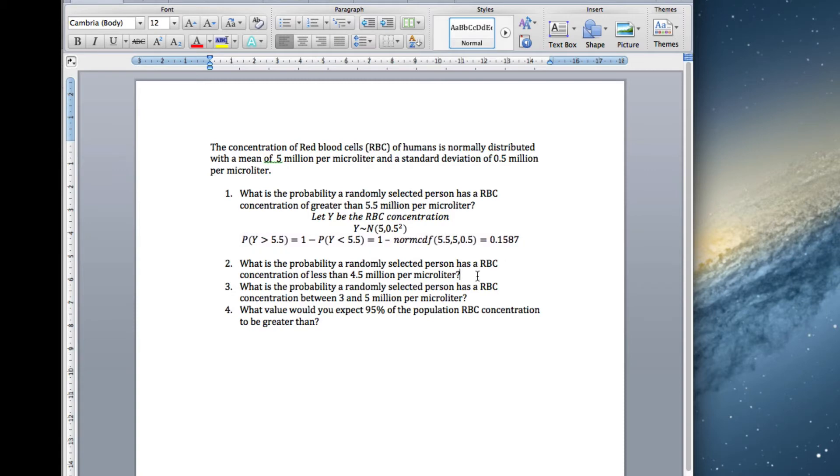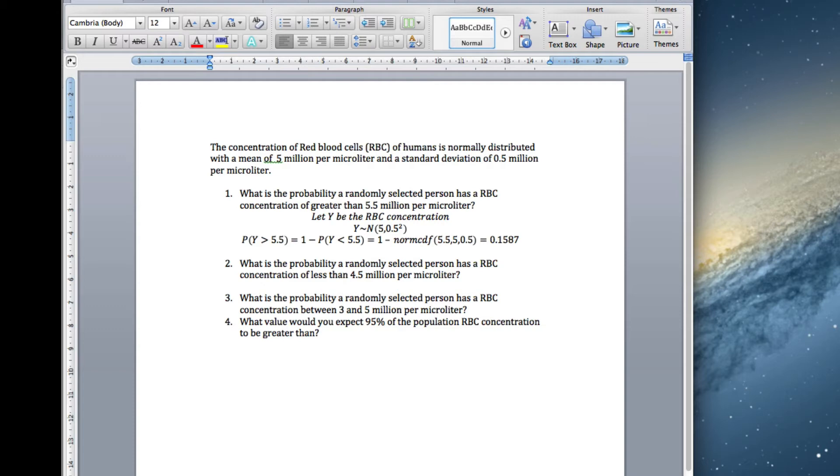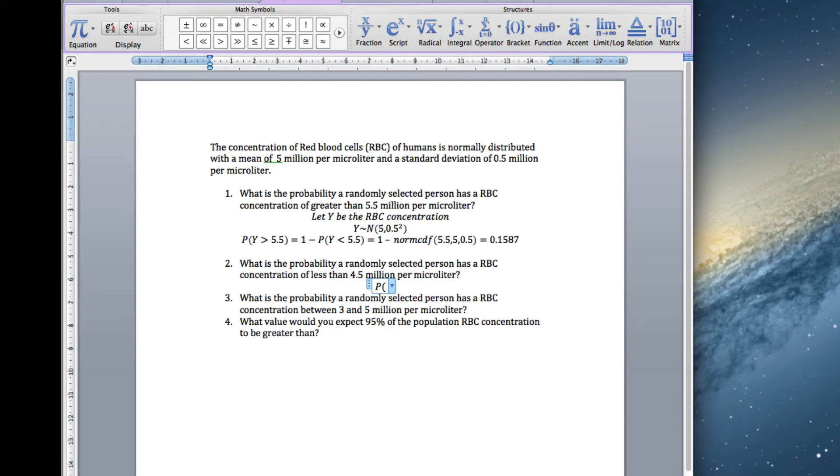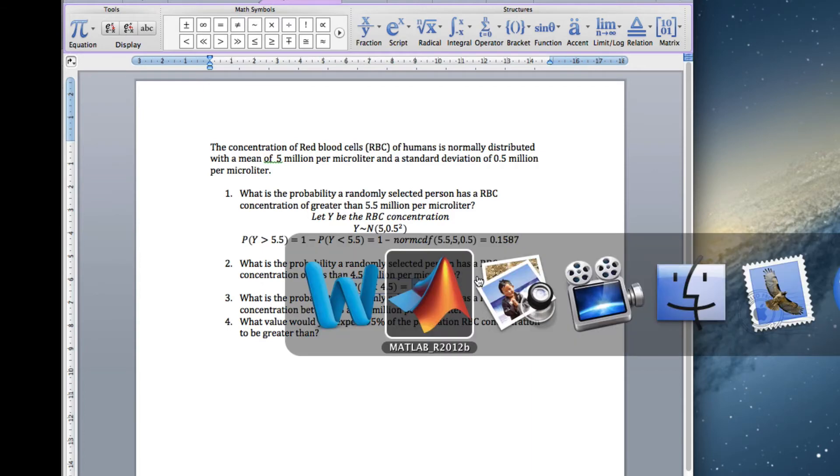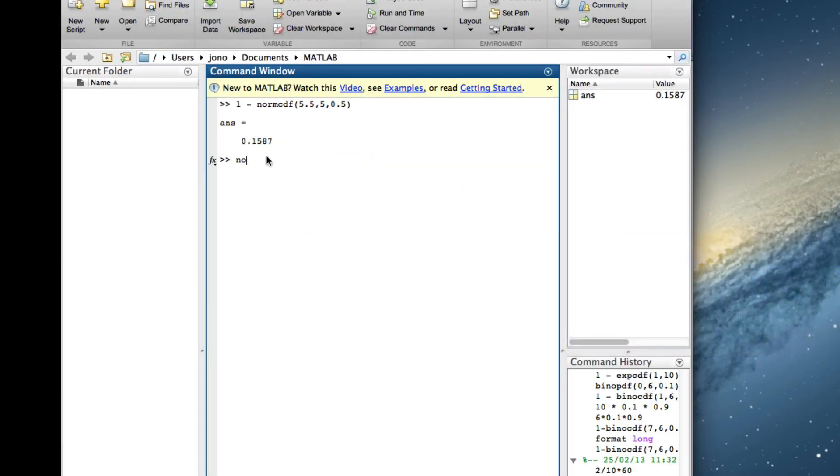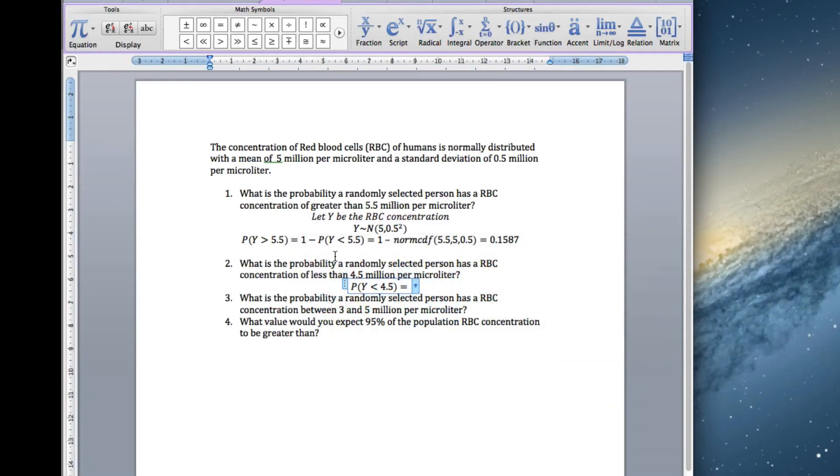Next one. What is the probability a randomly selected person has a red blood cell concentration of less than 4.5 microliters? This one's nice and easy. The probability that Y is less than 4.5. Well, it's already in the form of CDF, so it's just norm CDF 4.5, 5, 0.5. Set up my command. Equals.